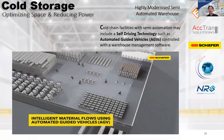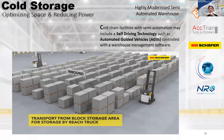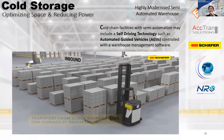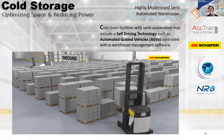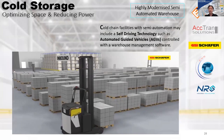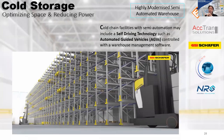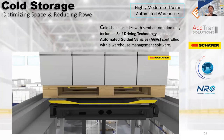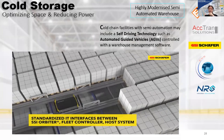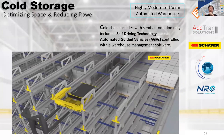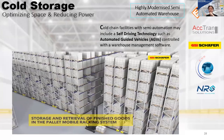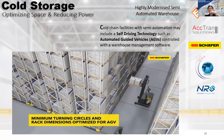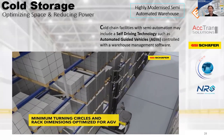I would like to show an example of a semi-automated system in this animated video, whereby a cold room facility with semi-automation includes a self-driving technology such as an AGV controlled with warehouse management software. In this video, the AGV picks up the pallet from the incoming area and puts it away into a channel storage system. This can be achieved by having a standardized IP interface between the shuttle, fleet controller, and the host system. A similar concept is applicable to a mobile racking system as well.